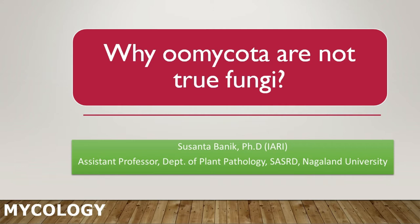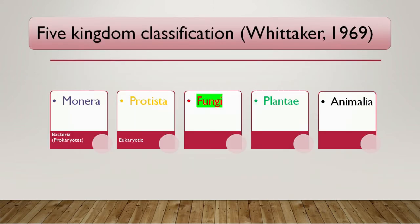We will see this answer in this lecture. If you can recall, the classification of organisms was made at various times — two kingdom classification, three kingdom classification, then came five kingdom classification. Whittaker in 1969 gave the five kingdom classification, where fungi were treated as a different kingdom. Earlier, fungi were grouped under Plantae.